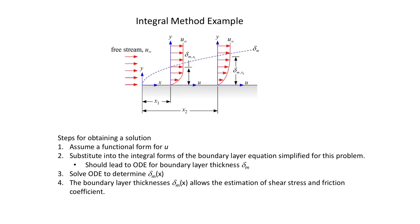Conditions like no-slip and free stream velocity equal to the velocity at the edge of the boundary layer. The goal is to come up with an ODE — we haven't done that yet. We've only gotten as far as our velocity solution. We want to get to an ODE that we can solve for the boundary layer thickness, and then use that thickness to calculate other things we care about.